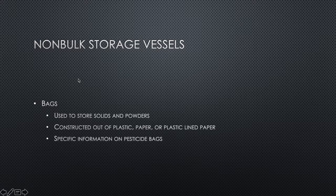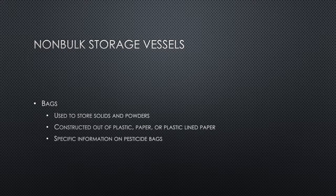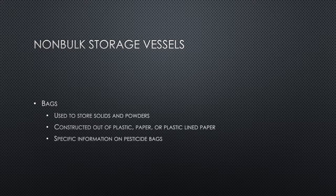Bags are another form of non-bulk storage vessels. They're used to store solids and powders, constructed out of plastic paper or plastic-lined paper. Specific information on pesticide bags includes the product name, active ingredient, hazardous statement, total amount in the container, manufacturer's name or address, and EPA registration number. Remember that bags can be used to store pesticides — a pretty nasty chemical to come in contact with. They're poisonous and highly toxic by all routes of entry, and can cause severe eye damage or skin irritation.